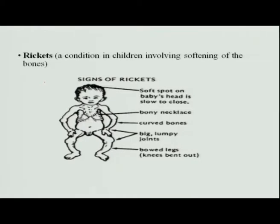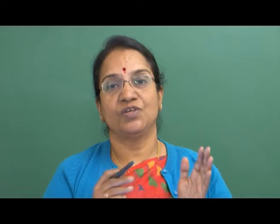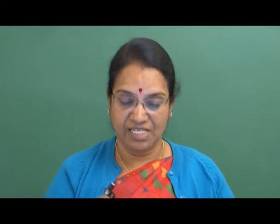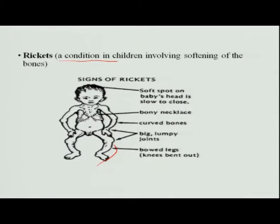In children, calcium deficiency causes rickets, which was also discussed under vitamin D deficiency. This is because vitamin D is essential for calcium absorption — if there is no vitamin D, there is no calcium absorption. When calcium is lacking, the bones do not form properly, become deformed, and signs of rickets appear in infants.